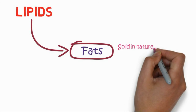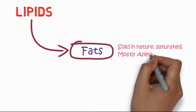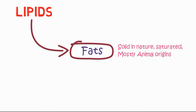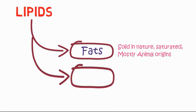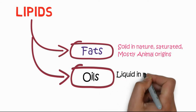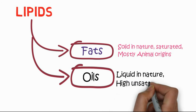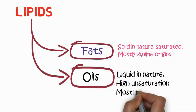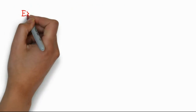The first class is known as fats. Fats are solid in nature, mostly saturated, and are usually obtained from animal sources. The second class is known as oils. Oils are liquid in nature, have a high degree of unsaturation, and are mostly obtained from plants.